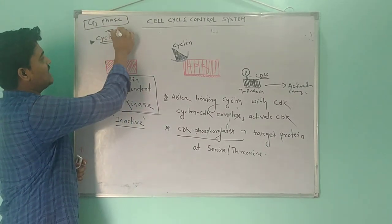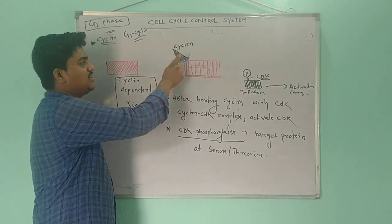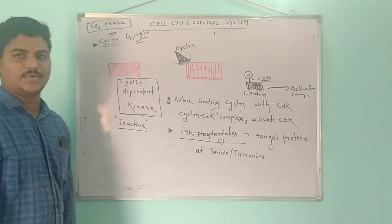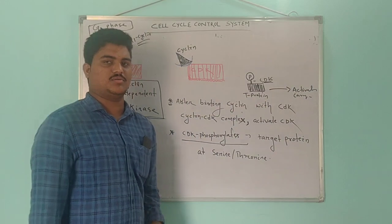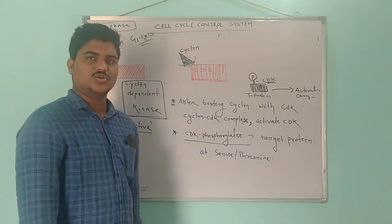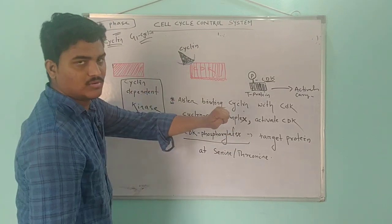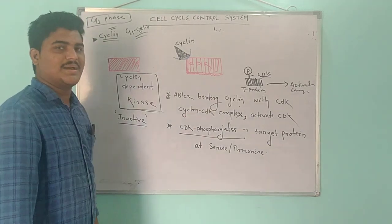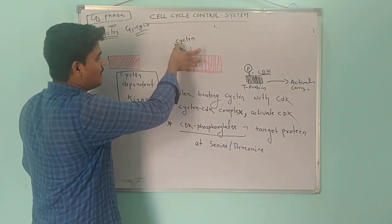In the G1 phase, certain cyclins are present — for example, G1 cyclin. When G1 cyclin binds with the CDK present in the G1 stage inside the cell, CDK will be activated. After completion of the required activities, CDK needs to become inactive — there is no further need for phosphorylation. At that point, degradation or destruction of cyclin starts. When cyclin is destroyed or degraded by the proteasomal degradation or ubiquitin pathway, the cyclin-CDK complex breaks.